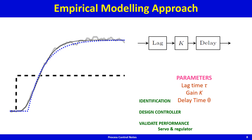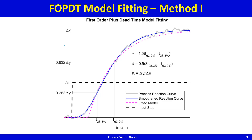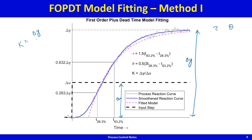There are two commonly noted approaches in the literature. Method one is actually very simple: you choose two points on the process reaction curve. There are two unknown parameters — tau the time constant and theta the dead time. The gain is straightforward: if you give a small change delta u and the output changes by delta y, then k equals delta y over delta u.